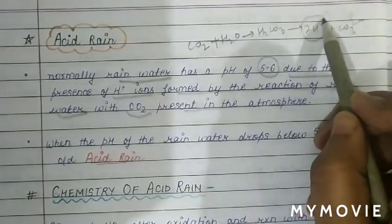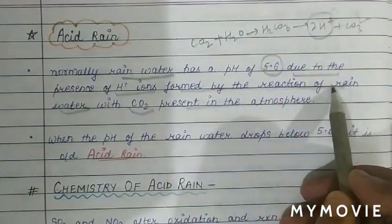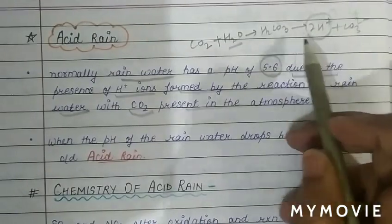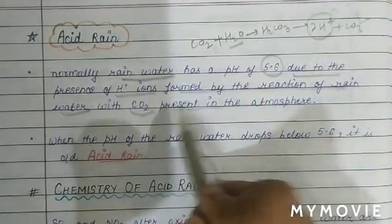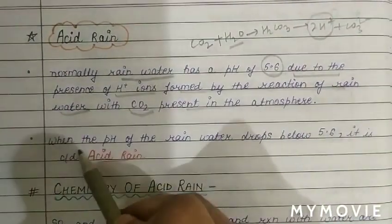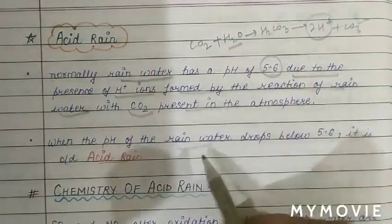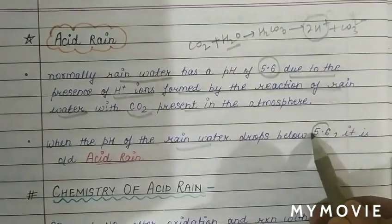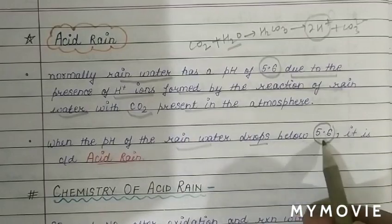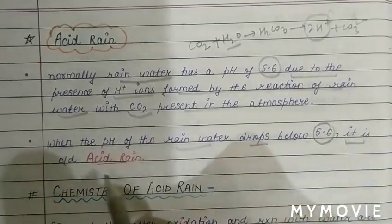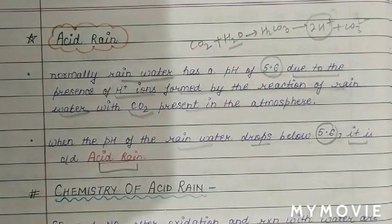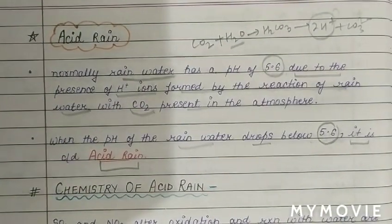CO2 reacts with water vapour to form H2CO3 (carbonic acid), which furnishes H⁺ ions and carbonate ions. If the pH of rainwater drops below 5.6, the rain is considered acid rain.